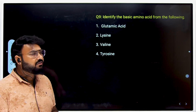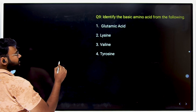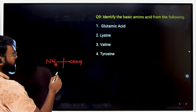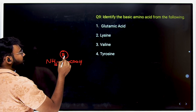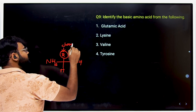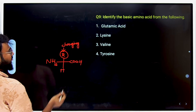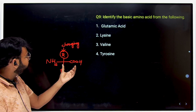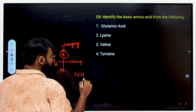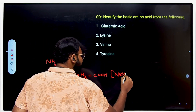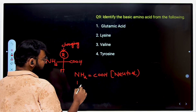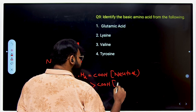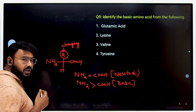The next question: identify the basic amino acid from the following. The general structure of an amino acid has a carboxylic acid group, an amine group, a hydrogen, and a variable residue R. When the amine group equals the carboxylic acid group, it's a neutral amino acid. When the R group contains an extra NH2 making amine groups more than carboxylic groups, it's called a basic amino acid.